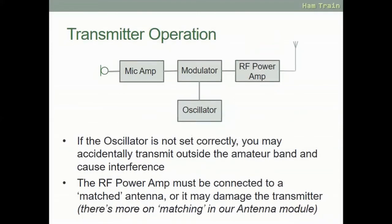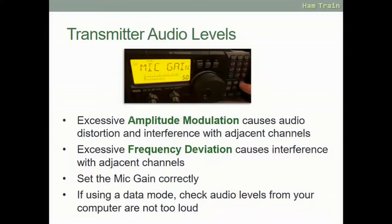Regarding transmitter operation: if the oscillator is not set up correctly, you may accidentally transmit outside the amateur band and cause interference. You must make sure the RF oscillator or the dial on your radio is set to the correct frequency. The RF power amplifier must be connected to a matched antenna, or it may cause damage to the transmitter — we'll cover antenna matching in the antenna module.